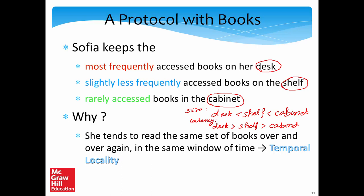Why does this strategy make sense? When Sophia is preparing for an exam, she tends to read the same books over and over again. In a short window of time — maybe a day or two before an exam — a certain set of books will be accessed repeatedly. This pattern is called temporal locality. Temporal means time, and when we access the same thing over and over again in a short duration, that's temporal locality.